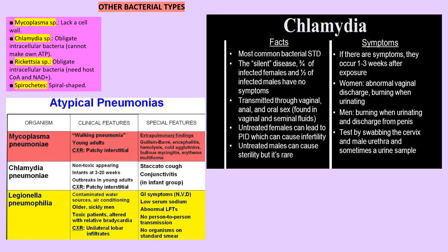Treponema pallidum causes syphilis; we discussed the primary, secondary, and tertiary stages in oral pathology. Treponema is visualized by dark-field microscopy and we should know features of congenital syphilis. Borrelia burgdorferi causes Lyme disease, with stage 1 being migratory erythema, stage 2 neuropathy, and stage 3 arthritis and CNS disease. Borrelia is visualized using aniline dye, Wright or Giemsa stain with light microscopy, and is transmitted by ticks. It is most endemic in Connecticut, New York, Pennsylvania, and New Jersey.